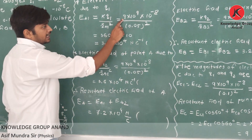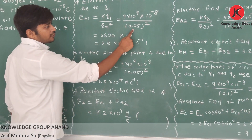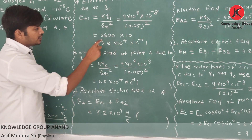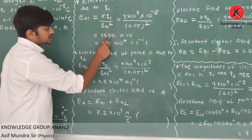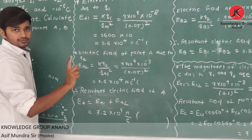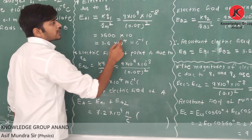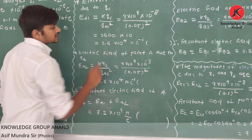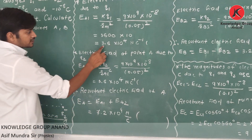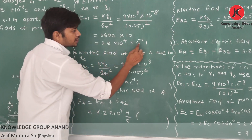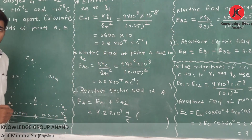9 divided by 0.05 squared gives 3600. With 10 raised to 9 and 10 raised to minus 8, the net power is 10. So the answer is 3.6 into 10 raised to 4 newtons per coulomb.